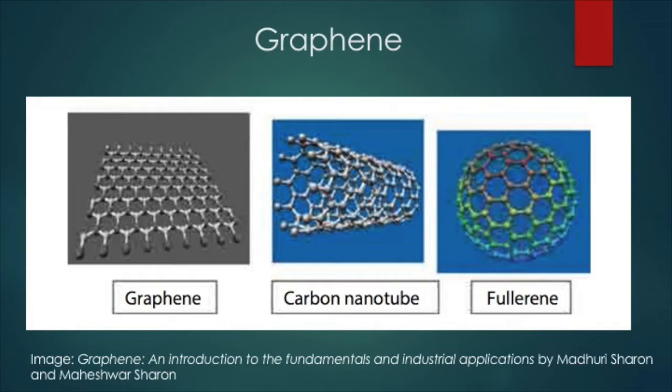Although typically the term graphene refers to the 2D planar structure pictured here, these sheets can be shaped to form other structures, such as rolled one-dimensional carbon nanotubes and zero-dimensional hollow ball-shaped structures known as Buckminster fullerenes.